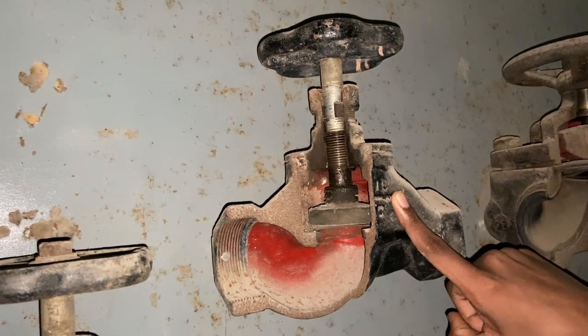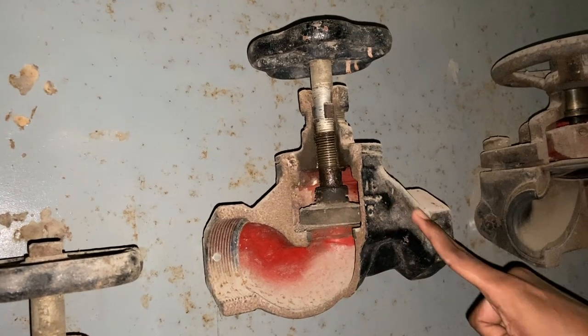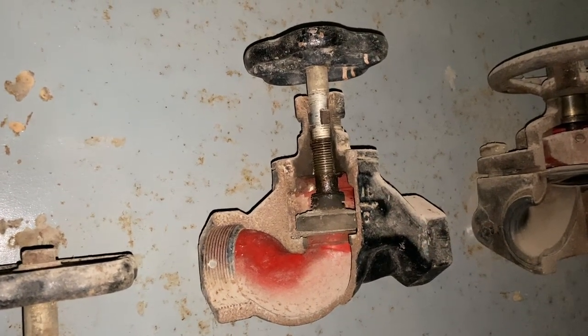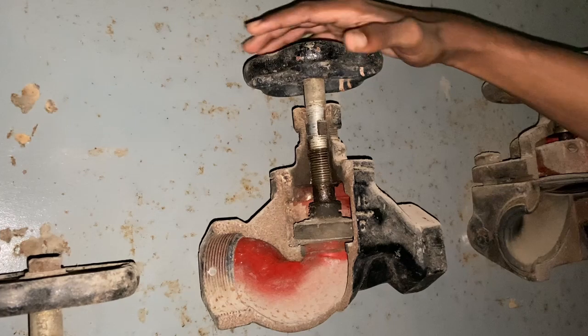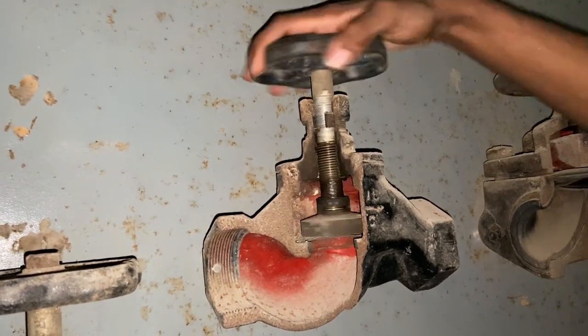This is a cut section of the globe valve. Fluid enters through this side, goes up around the disc and exits from this side. Recognize that each of these valves is a minor loss by itself.